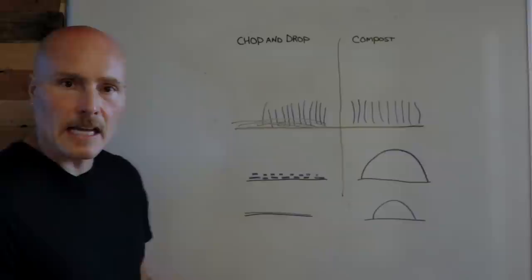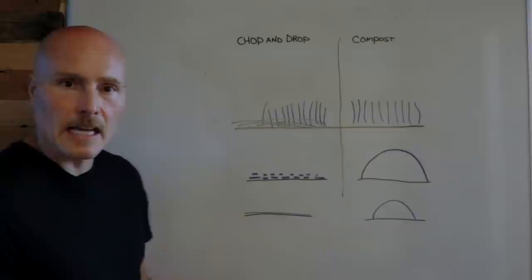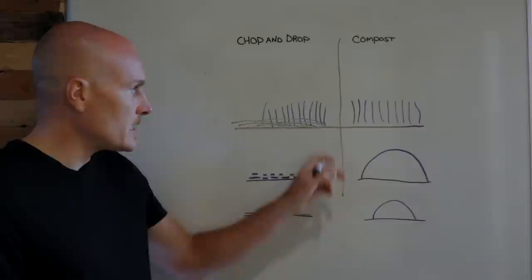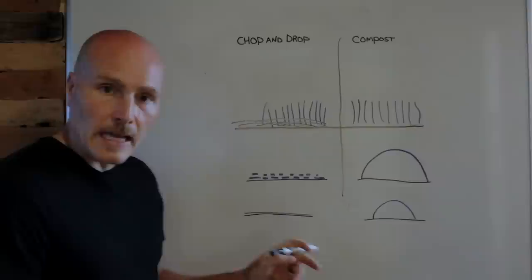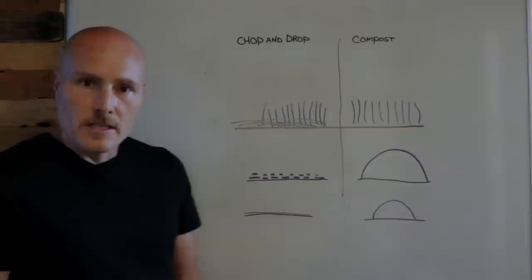This chopping and dropping then with this thin layer of biomass really mimics what nature does. Imagine now this is a herd of buffalo coming through. This is how the Great Plains were built. Knock it over, the next plant grows up through. Knock that over, the next one goes up through. The animals are pooping. They're recycling nutrients onto the soil. The soil is building.